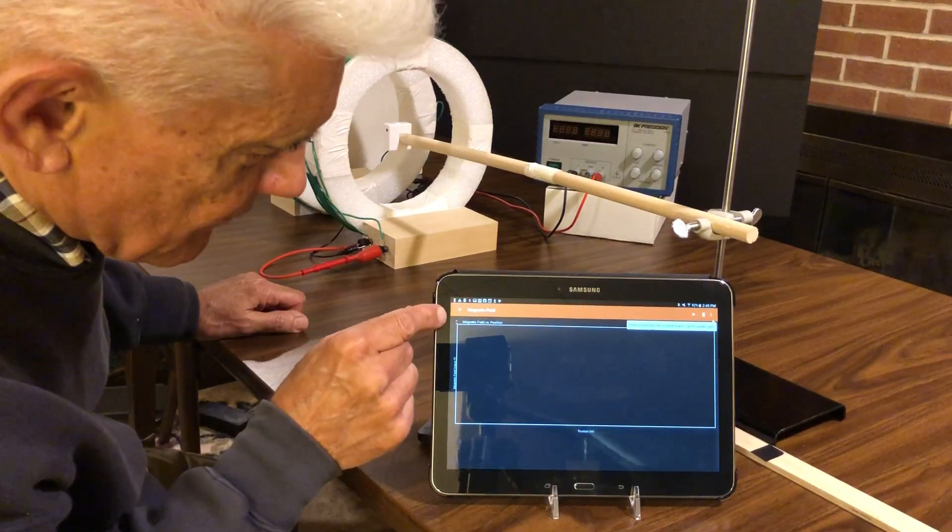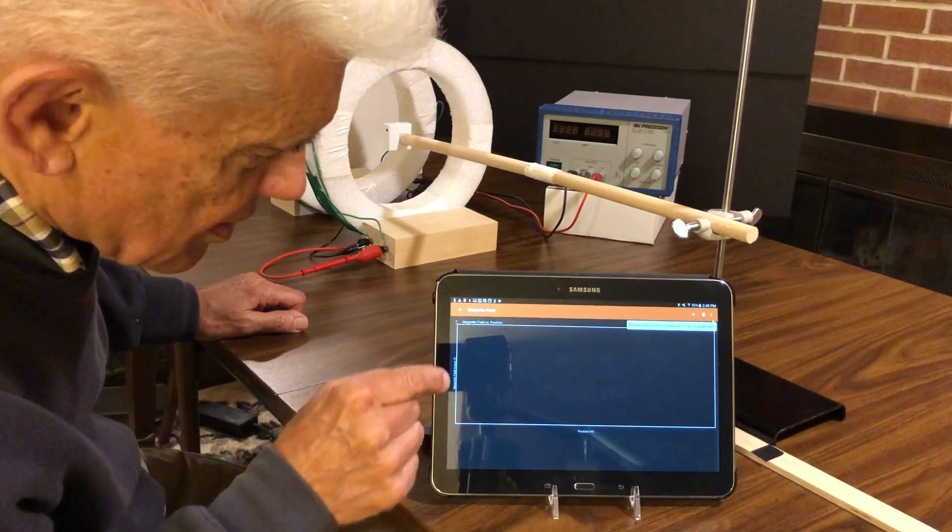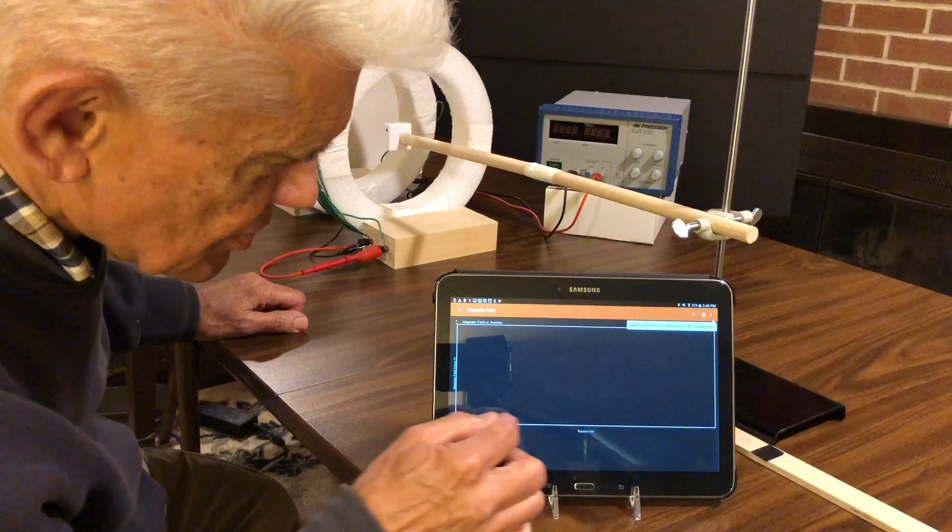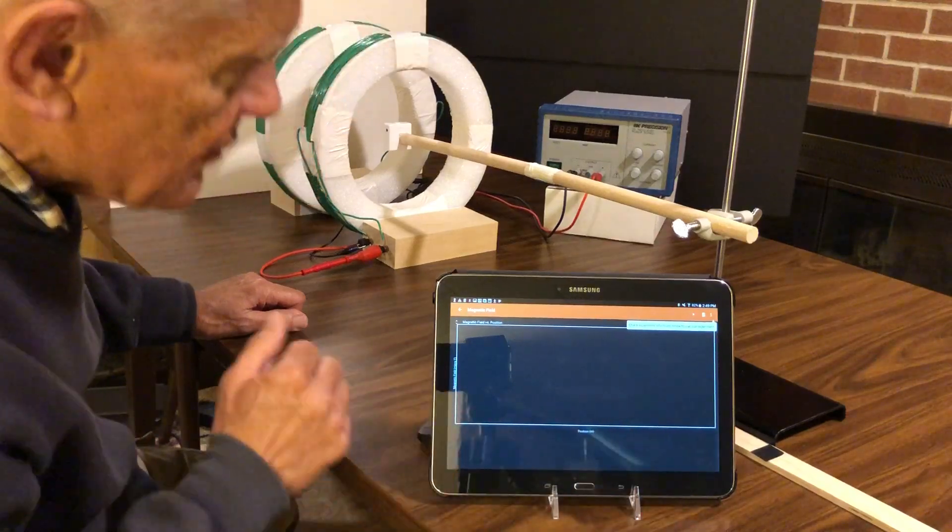As you can see it's setting up a graph of magnetic field strength along the y-axis and position of Voyager along the x-axis.